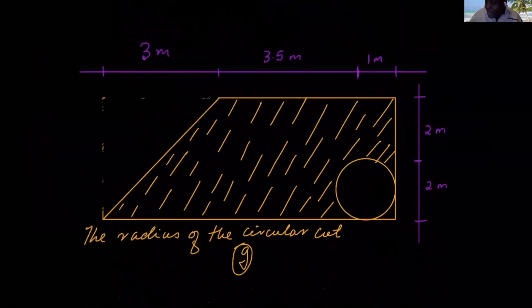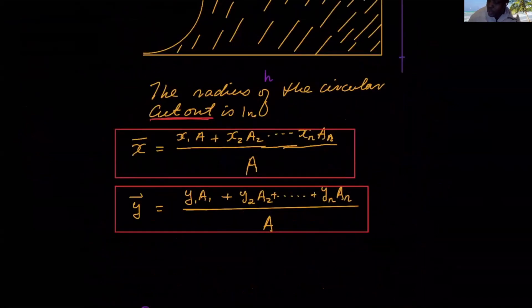And here's another one. Here, this one is made of a triangle, a rectangle, and a cutout of a circle. So if it is a cutout, all you basically do, instead of saying plus x1 a1, you basically just use the negative. You just say minus, because it's been cut out. Are we together?